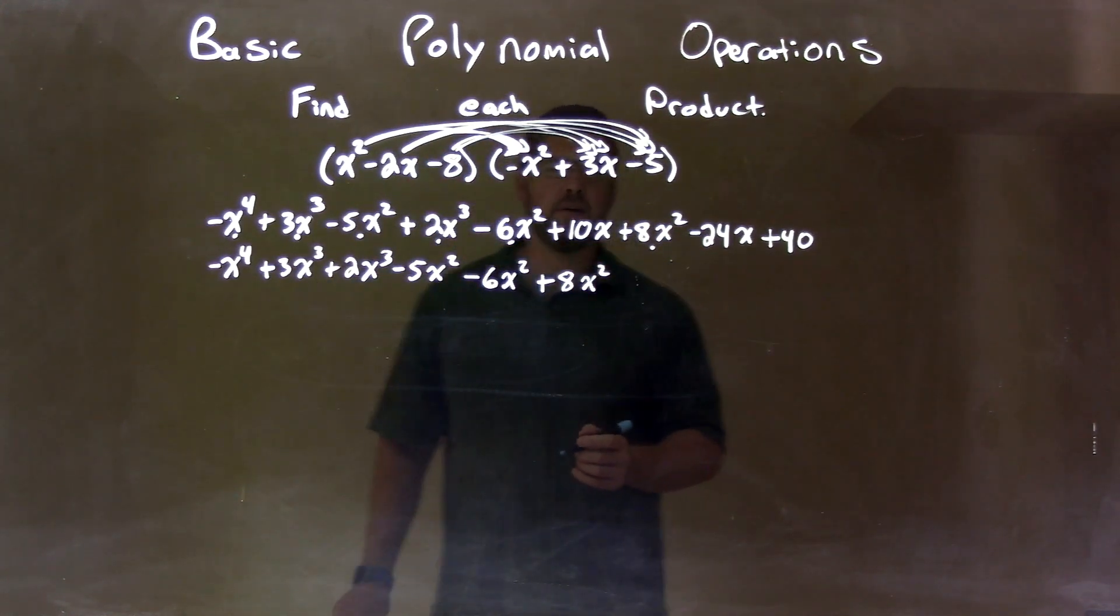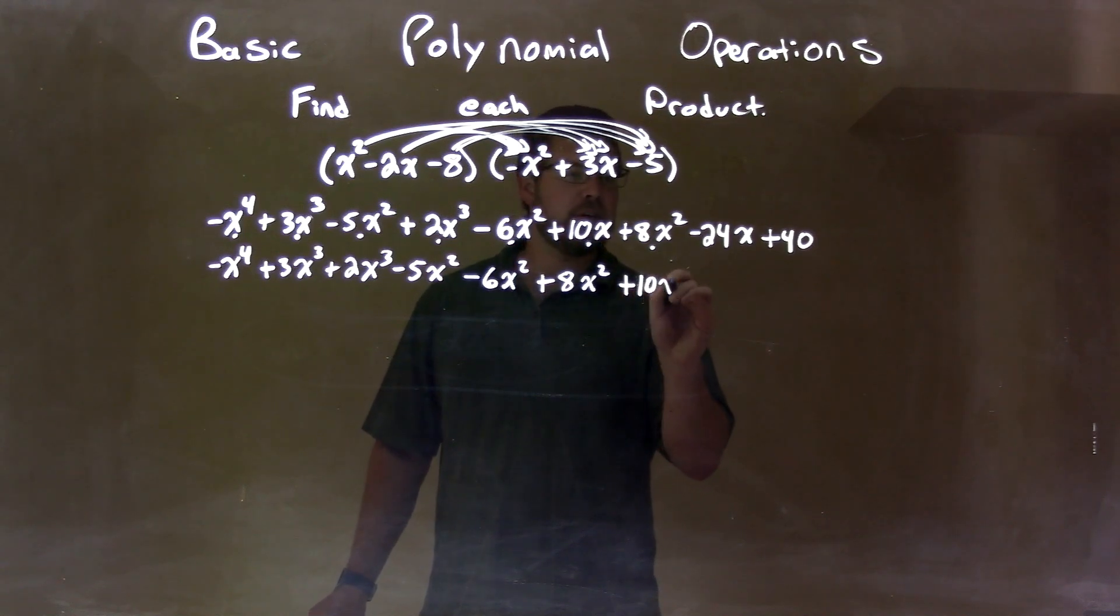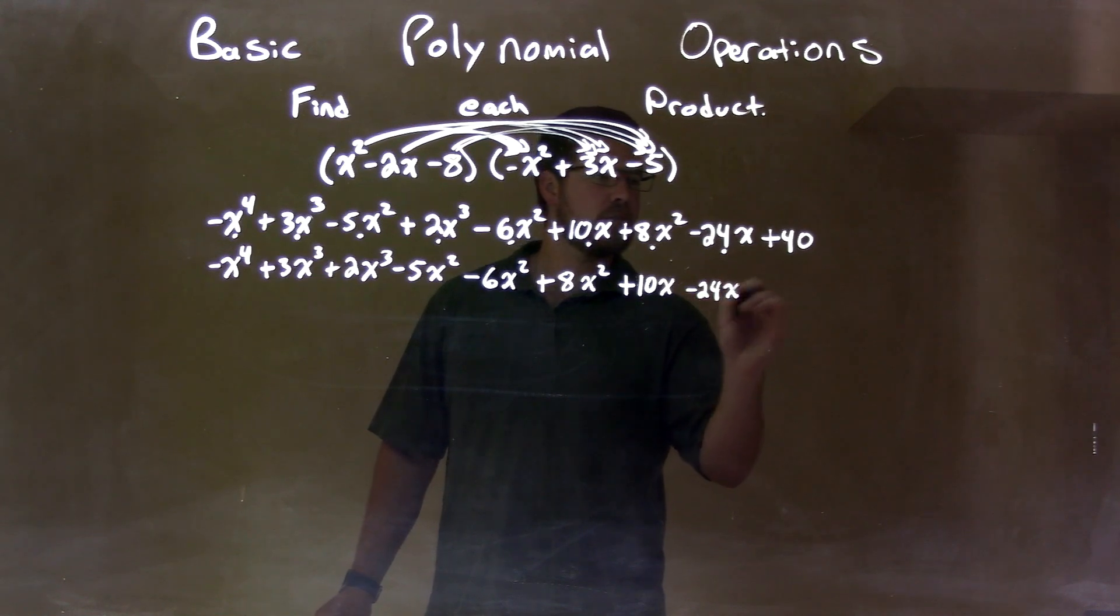Then, from there, we bring down our x's. So, we have plus 10x. And, then, minus 24x. And then, I'm going to bring down the plus 40.